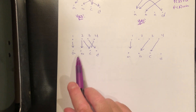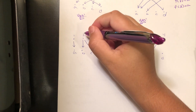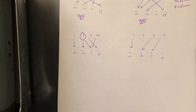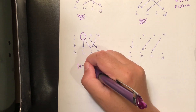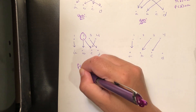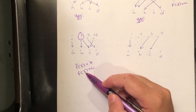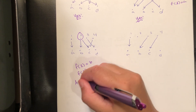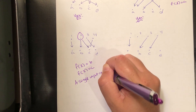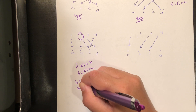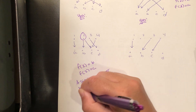The third diagram — is this going to be a function? Here's the problem: we have two arrows coming out of one element of the domain. We have F of 2 getting mapped to B, but also getting mapped to C. This can't happen — a single input cannot have two different outputs. So this is not a function.